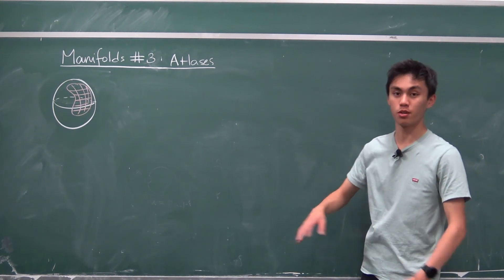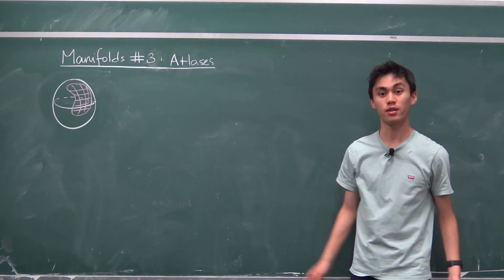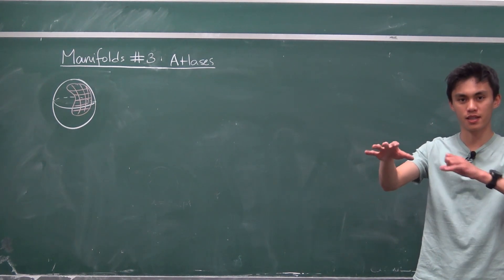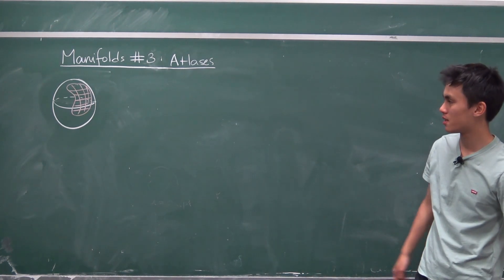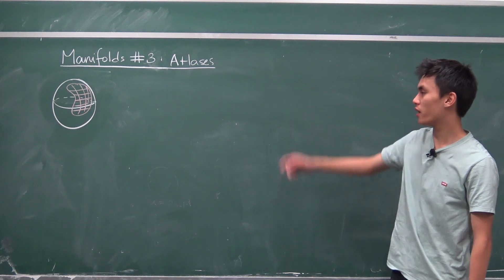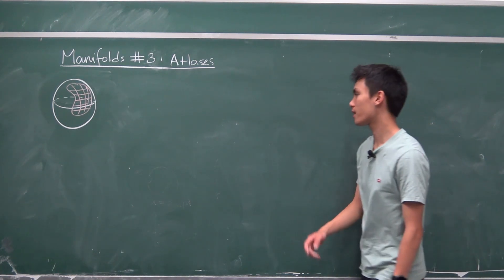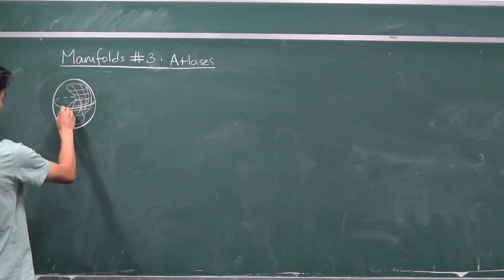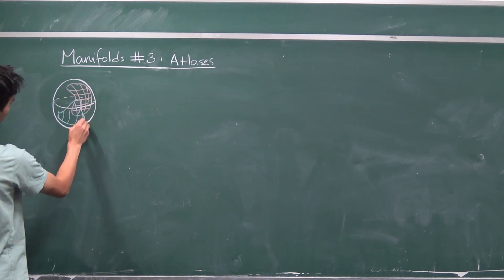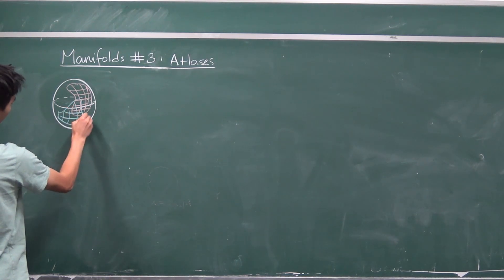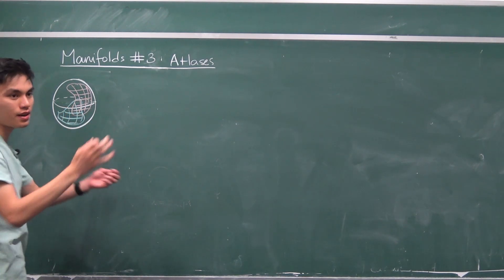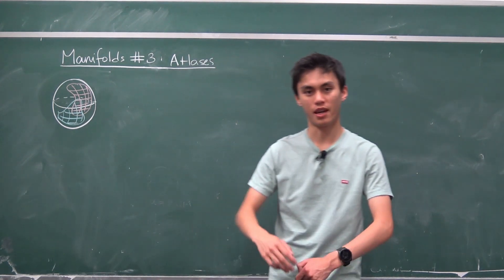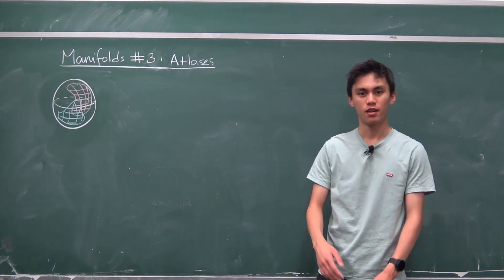Now this is something we should be able to do for the whole entire manifold. You cover different regions in different coordinate systems, and that's essentially what an atlas is — because charts only cover a small region, you want to be able to do this for every single region on your topological manifold until you cover the whole entire thing.